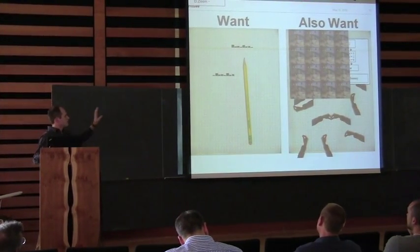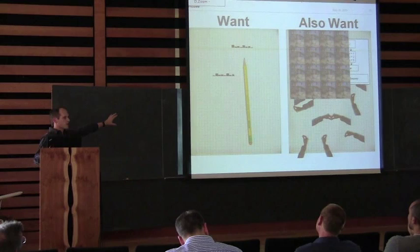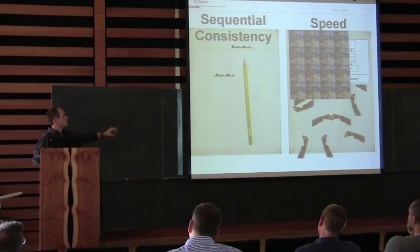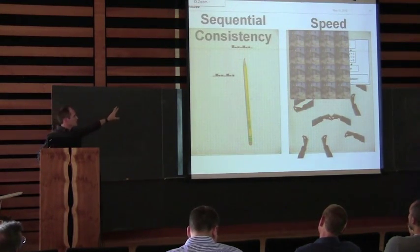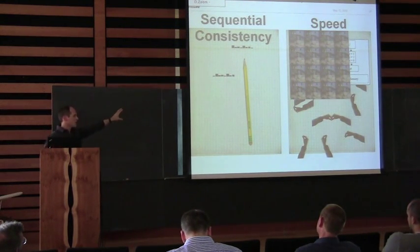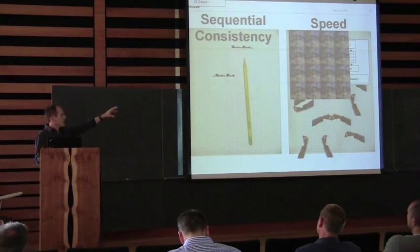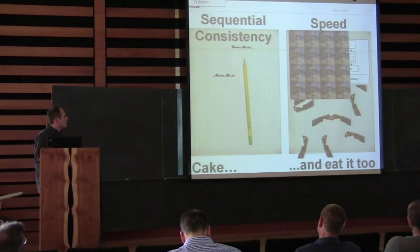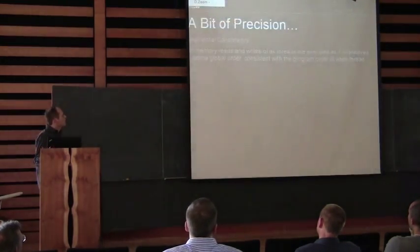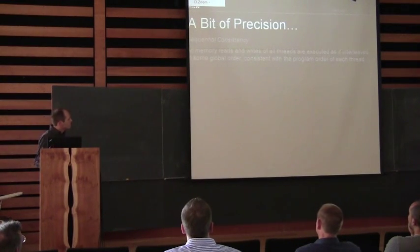We would like to have this simple model that we can understand and program with, but we want the speed of this other model. Basically what we want is sequential consistency — something logical — and speed. We want our cake and we want to eat it too.